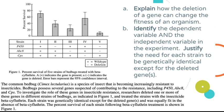Now the questions: Part A says 'explain how the deletion of a gene can change the fitness of an organism,' so we have to think about what fitness actually means. Fitness is a measure of reproductive success — how many times can an organism reproduce and produce offspring that can also reproduce. Part B asks you to identify the dependent and independent variables and justify the need for each strain to be genetically identical except for the deleted genes.